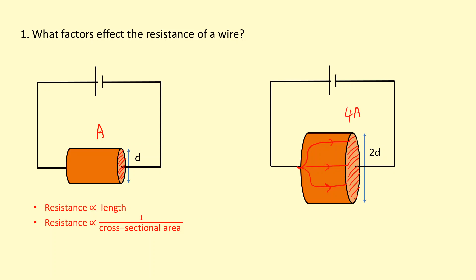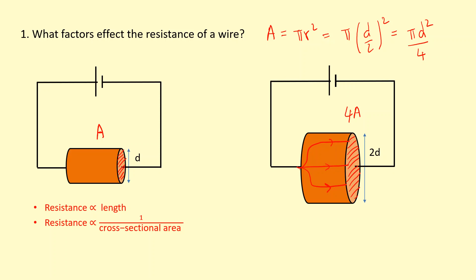Why is that? Because the area of a circle is π r², and since r = d/2, that becomes π(d/2)², which equals πd²/4. The constants 4 and π appear in both conductors so we can ignore them. This means cross-sectional area is proportional to diameter squared — or equivalently, to radius squared.